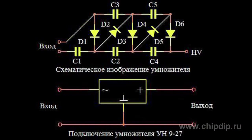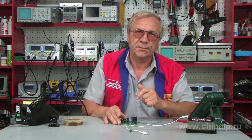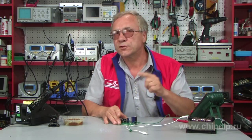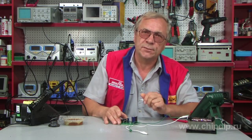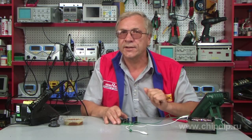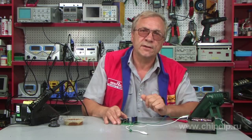A voltage multiplier consists of diodes and capacitors joined according to voltage multiplier schemes, which are AC-DC converters of low alternating voltage into high DC voltage. There are several types of voltage multipliers used in electronics, including serial and parallel voltage multipliers, both of which are commonly used in modern equipment.